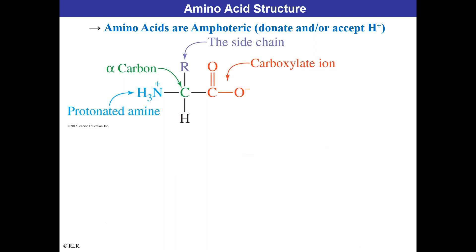Now we need to talk about amino acids. We just introduced the essential and non-essential amino acid terminology. Amino acids are amphoteric — they donate and/or accept protons. There's an amine group — the protonated amine NH3+ — and the carboxylate ion. In the previous chapter on acid-base, we introduced this with respect to having two different positive and negative ions that can exist in an amino acid, dependent on the pH environment.